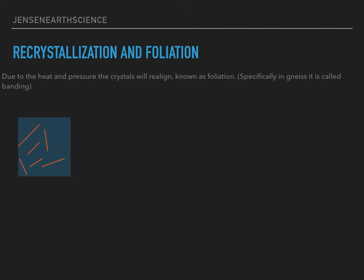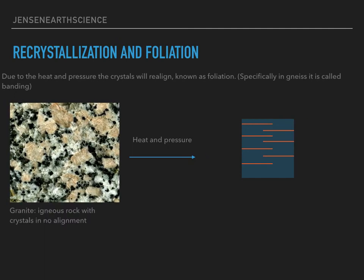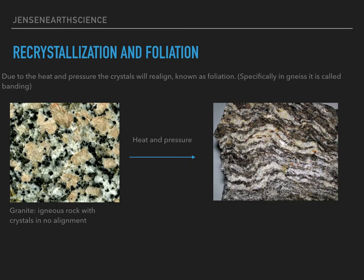So we'll start with, for example, an igneous rock. This will be our example for an igneous rock. The minerals in the rock have no specific order, and they are not aligned. After we add heat and pressure, the minerals in the original igneous rock will then realign in what we call foliation. We can use granite — it's an igneous rock with crystals in no alignment. After we add heat and pressure, this igneous rock can become the metamorphic rock gneiss.